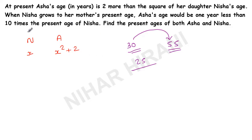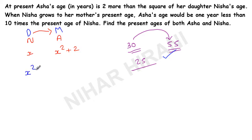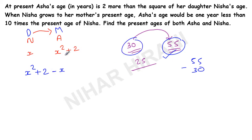Let me write one more letter here — D for daughter and M for mother — so it will be easier to understand. So the daughter wants to reach her mother's present age. It will take some years, but we don't know how many. We do the same subtraction: she needs to wait x squared plus two minus x years — that is mother's age minus daughter's age. After these many years she will reach her mother's present age.